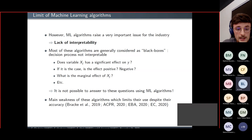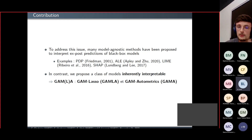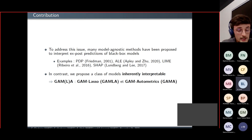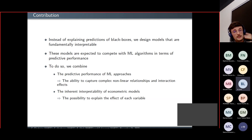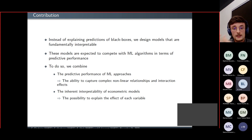To address this issue, some approaches have been developed in the literature. In particular, model-agnostic methods have been proposed to interpret ex-post predictions of black box models — examples being the accumulated local effect, LIME, and SHAP. But in contrast to these approaches, we rather propose a class of models which are inherently interpretable, denoted as GAMLA, which includes two main models: GAMLasso and GAMautometrics. Instead of explaining the predictions of black boxes, we design models that are fundamentally interpretable like traditional econometric models but are expected to compete with machine learning algorithms in terms of predictive performance.